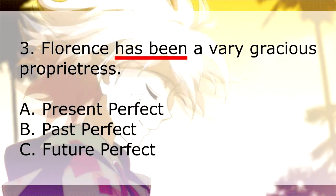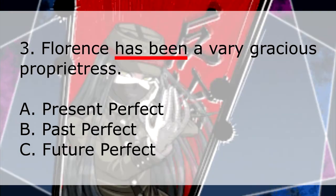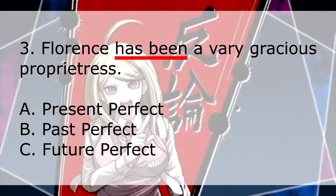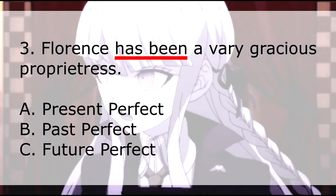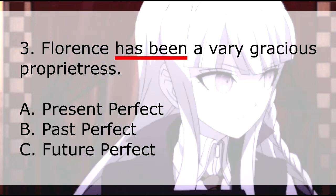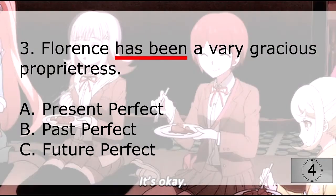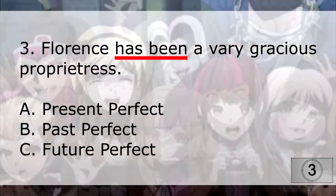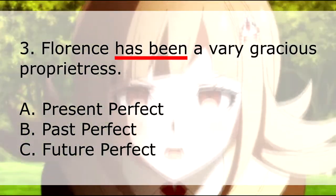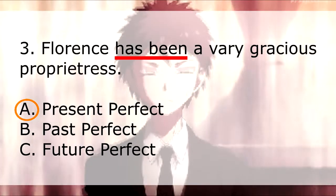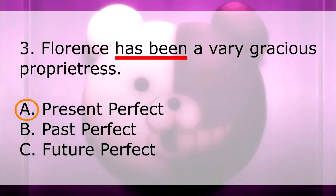Question 3: 'Florence has been a very gracious proprietress.' Which is the perfect aspect of the underlined verb 'has been'? A) present perfect, B) past perfect, C) future perfect? If you answered A, present perfect, then you're right.